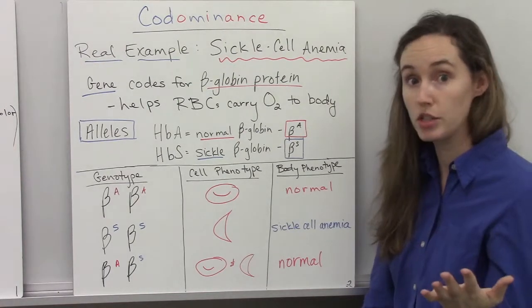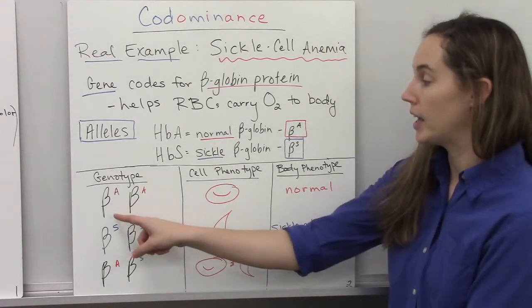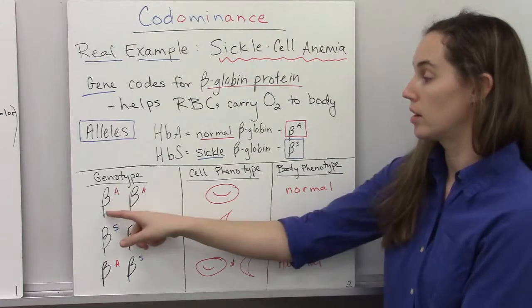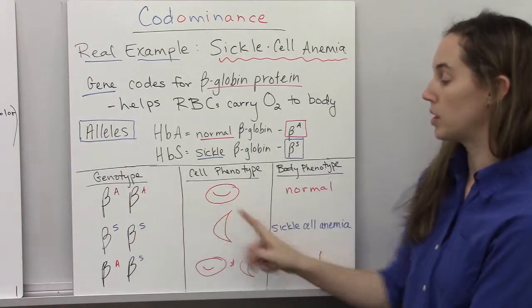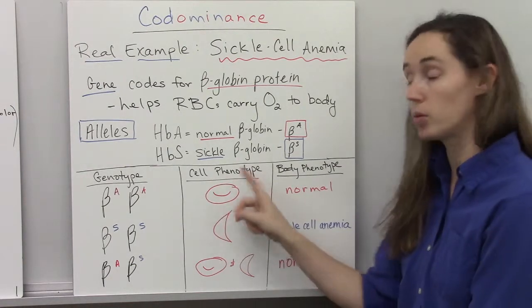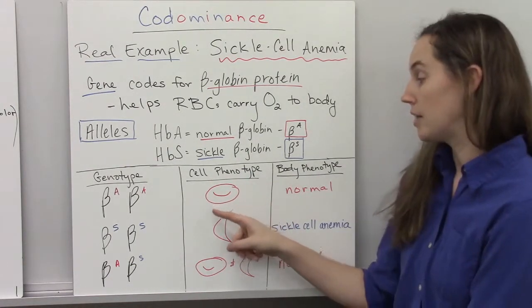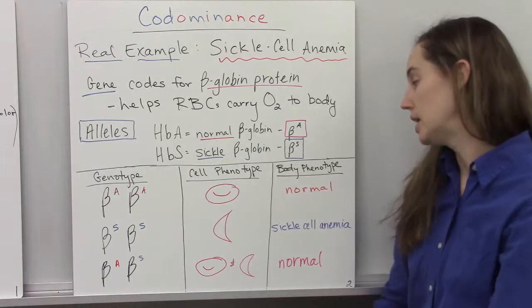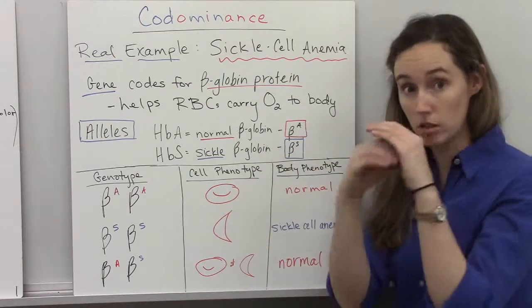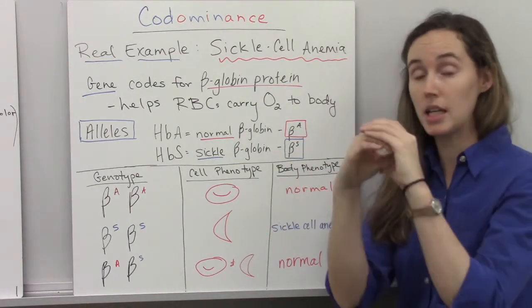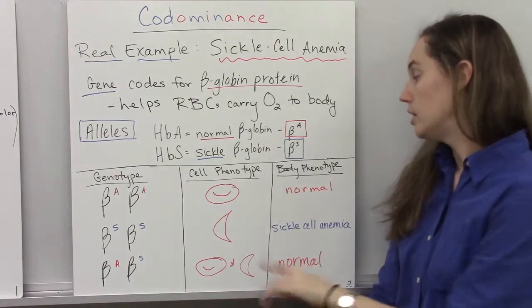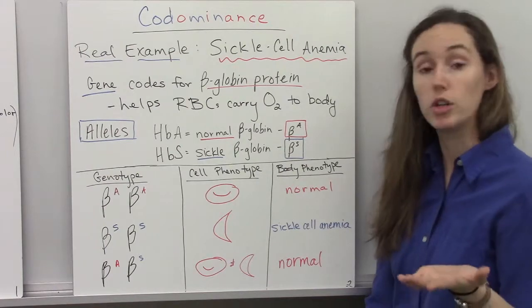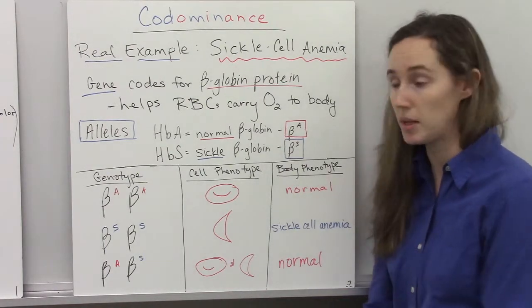So there are three genotypes. If you have a homozygous normal individual, all the red blood cells will be that cute little red belly button shape that flow easily through the blood. And so cellularly, you're only making normal red blood cells. And on the outside in your whole body, you demonstrate the normal phenotype. So you don't have any symptoms of sickle cell anemia.